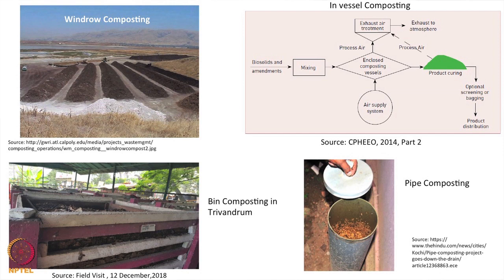In Windrow composting, they have covered yards or sheds. Segregated organic waste is layered with cow dung or other organic material. They activate the compost with inputs or other compost, and after about 45 days, they turn the waste. After the cycle is complete, they sieve it to remove solid metal or debris, and then apply the compost wherever needed.